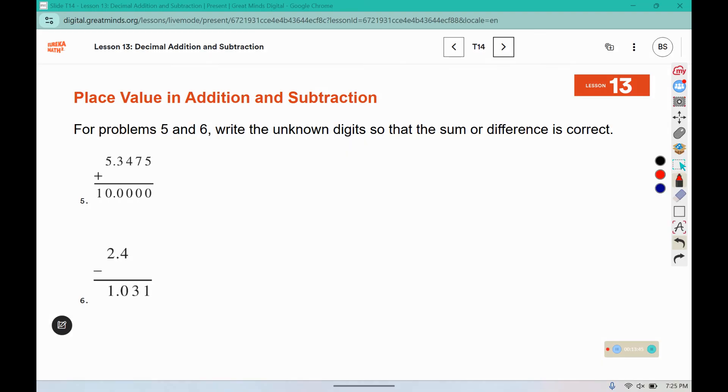For problems 5 and 6, write the unknown digits so the sum or difference is correct. Well to get a 5 here, we would need to, or to get a 0, we would need a 5 plus 5. Which would make it a 1 there. So 7 plus 1 is 8. So we need 2 more to get to 0. That would make another 10. 4 plus 1 is 5. So we need 5 more to get a 10. That ends in a 0. 1 plus 3 is 4. So we add 6 to 4 to get 10. 5 plus 1 is 6. So we need a 4 there to get a 10. And then the 1 plus 0 would be 1. So it should say 4.6525.